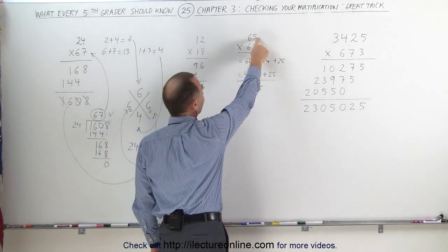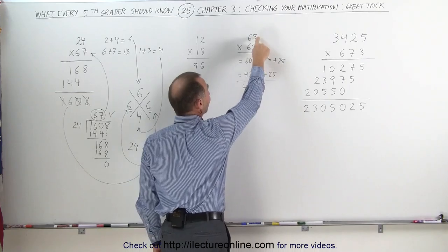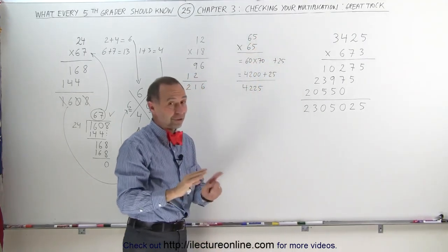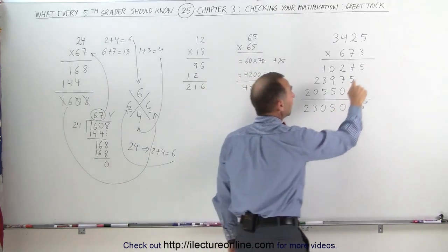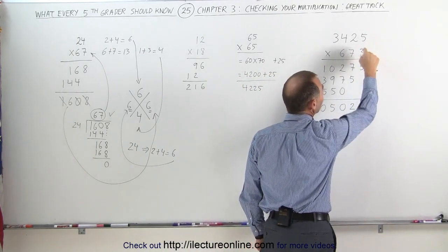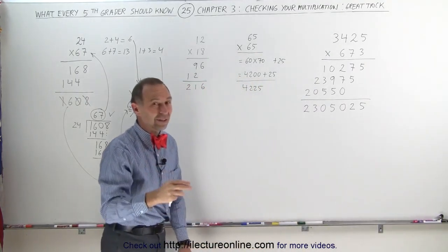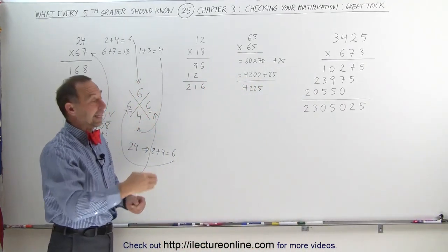Again, over here, you're multiplying 65 times 65, 5 times 5 is 25, which ends in a 5, your answer better end in a 5, or it's definitely not correct. And here again, 3 times 5 is 15, which ends in a 5, your answer better end in a 5 as well. So that's a quick check to see at least if it's correct in that respect.